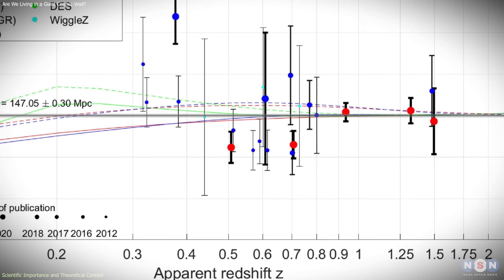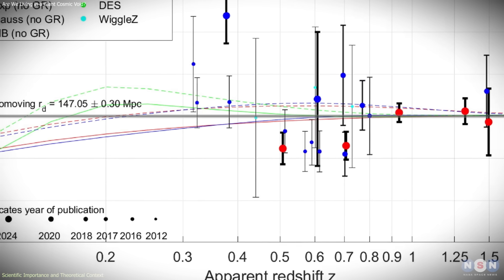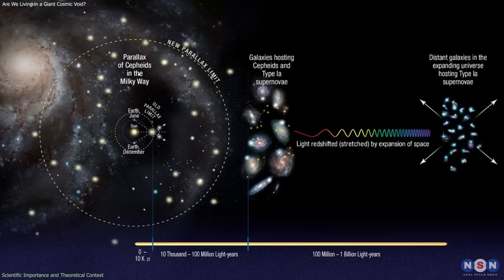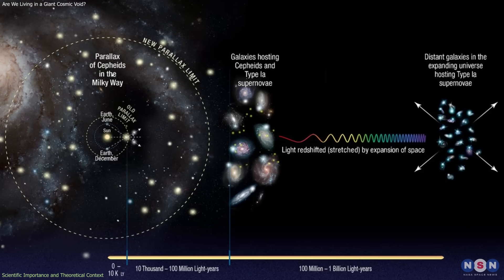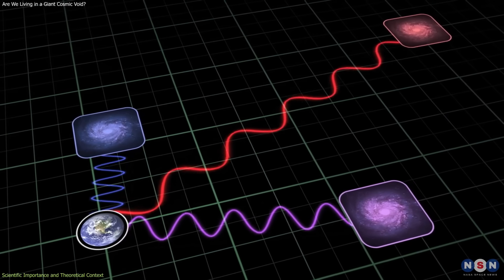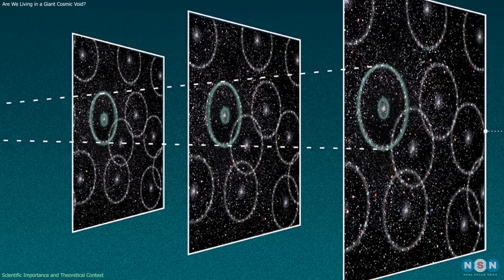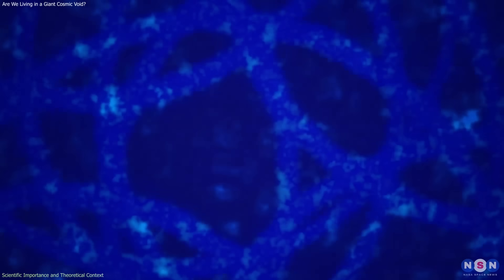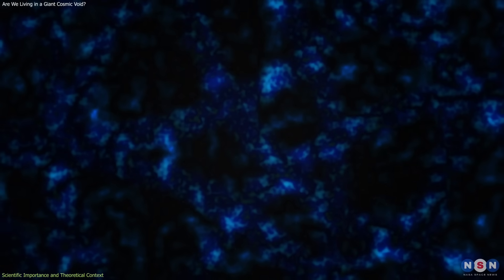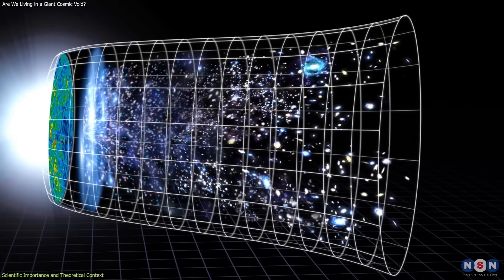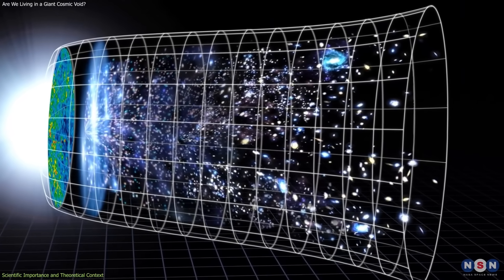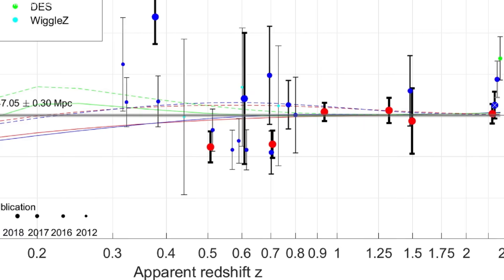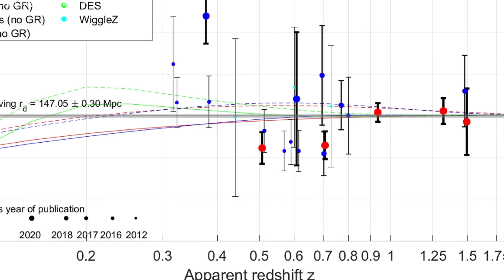What makes the BAO analysis especially significant is that it provides an independent test of this idea. The study does not rely on local distance ladders or galaxy velocity measurements alone. Instead, it examines primordial structure imprinted across cosmic time, linking early universe physics to late-time geometry. The results indicate that a perfectly homogeneous version of the standard Lambda CDM model is in notable statistical tension with the BAO observations.